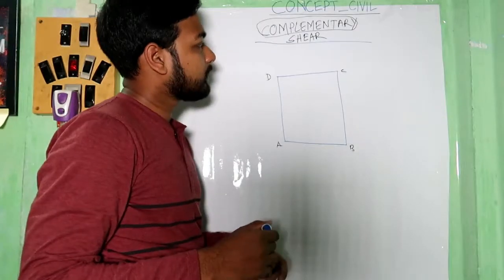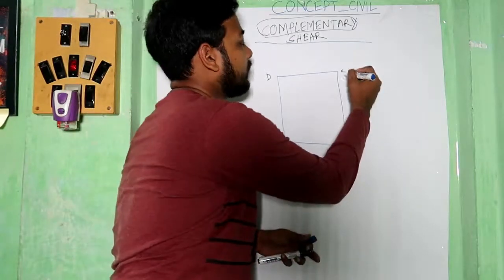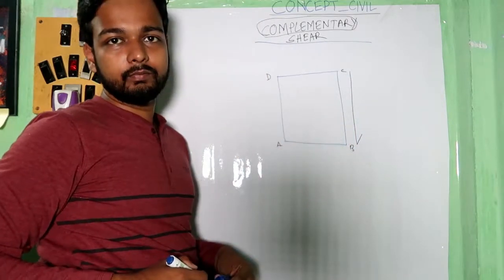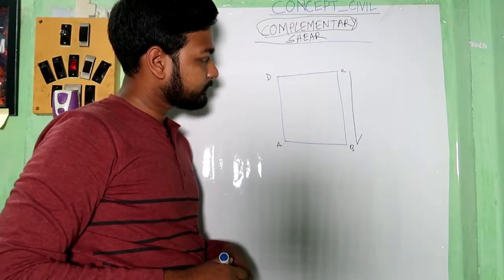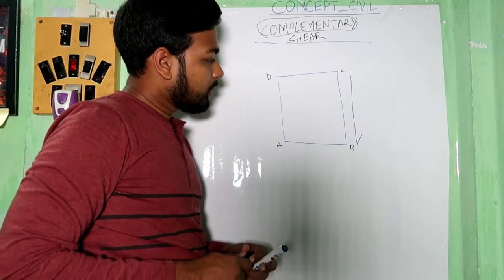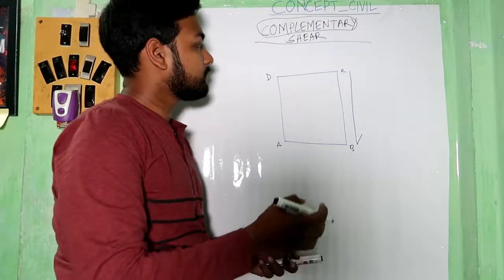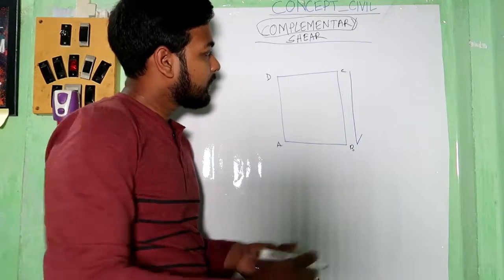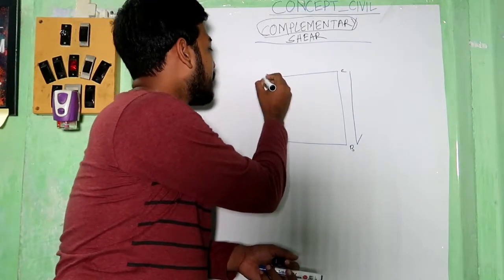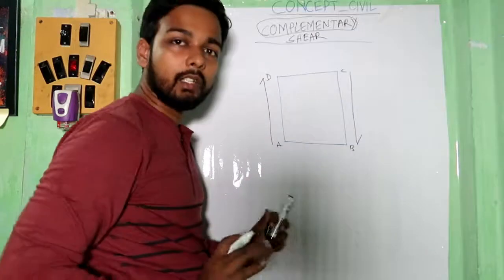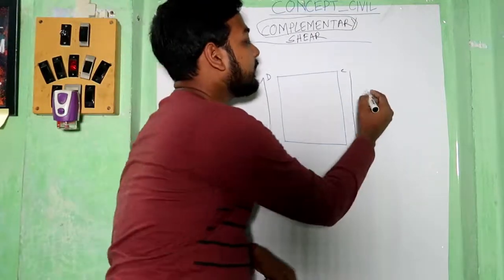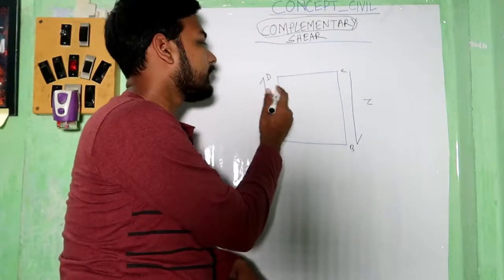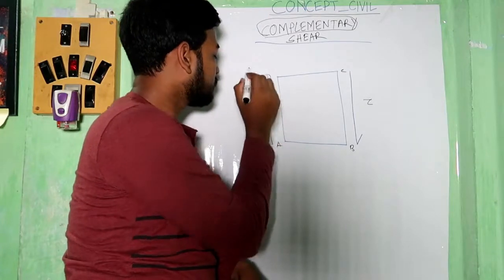So in this block, shear is acting on this way, and shear is acting on this way. As per Newton's third law, there should be an opposite direction. So I draw an opposite direction. This is Tau, so that should be Tau.